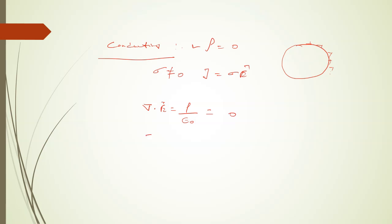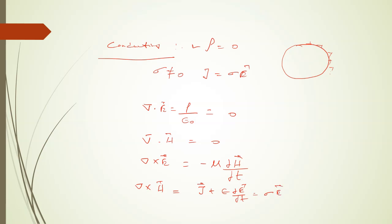From Maxwell's equations: del dot E equals rho over epsilon naught, and if rho equals zero then del dot E equals zero. Del dot H equals zero. Del cross E equals minus mu times partial H over partial t. Del cross H equals J plus epsilon times partial E over partial t, where J equals sigma E, so del cross H equals sigma E plus epsilon times partial E over partial t. This is equation 1d.